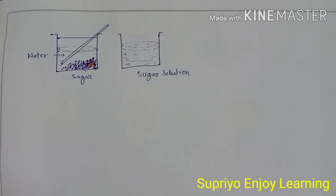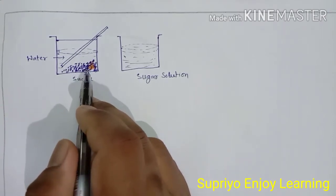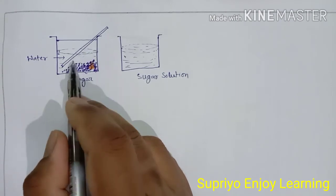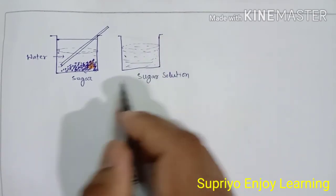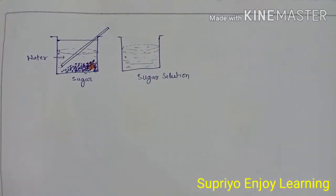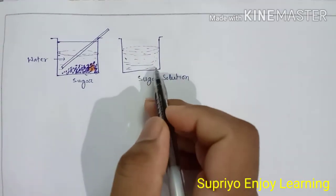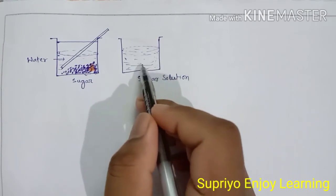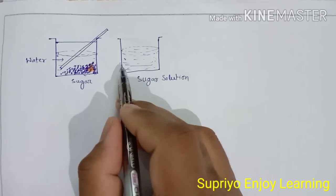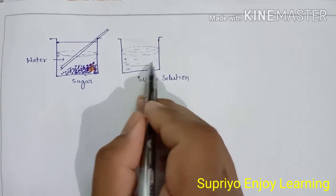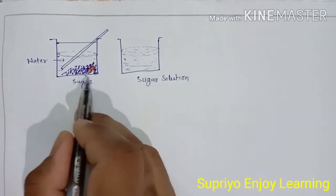If we dissolve some sugar or salt in water and stir it with a glass rod, we get sugar solution or salt solution. This dissolution process is also a physical change. If we boil this water and evaporate it from the sugar solution, the solid sugar remains on the bottom of the container. So this is also a physical change.